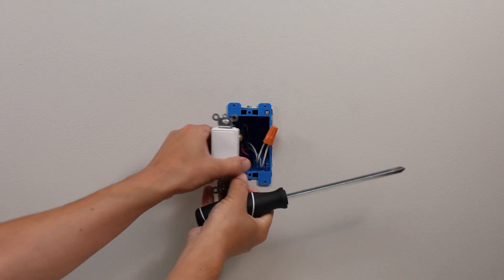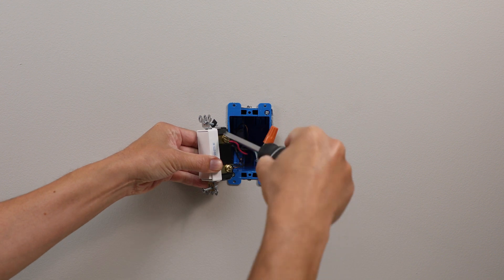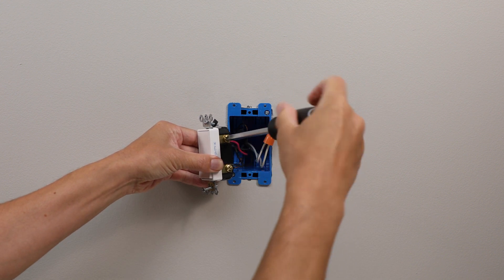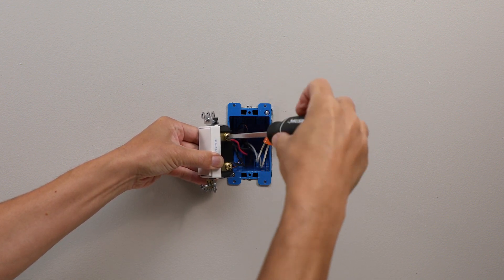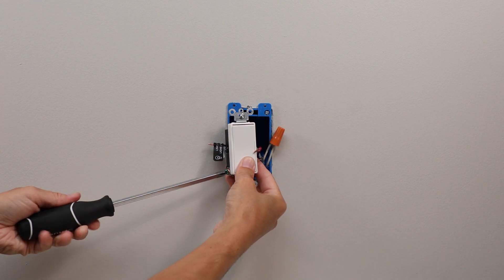Next, detach the traveler wires. Normally these are red and black from the existing switch. Do the same with the ground wire, usually green or bare copper.